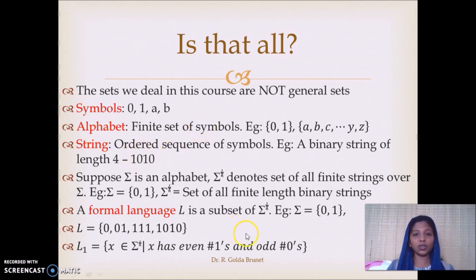The sets that we deal in this course are not general sets. So, to understand what kind of sets we use in our course, let's understand some terminologies. Symbols: Symbols are basic units which are undividable and examples include 0, 1, A or B. Alphabets are finite set of symbols. For example, 0 and 1 are alphabets of binary number system. A, B, C, D, etc. up to Y, Z are alphabets of English.